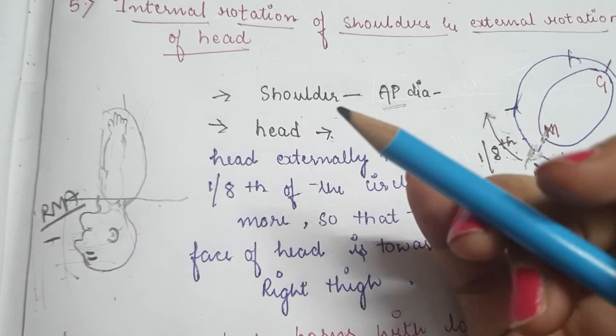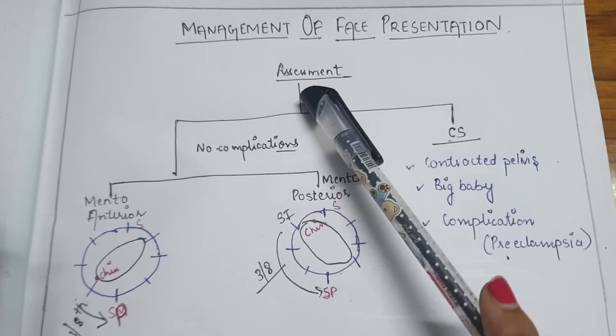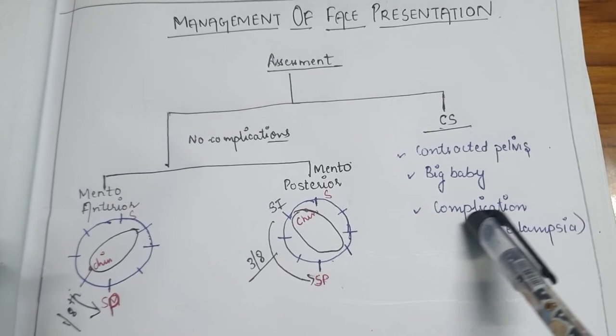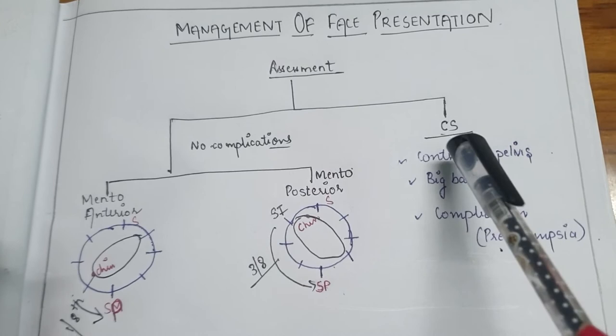After internal rotation of shoulders and external rotation of head, the whole body is born with lateral flexion. For management of face presentation, first we should assess fetal and maternal condition. If there is a contracted pelvis, a big baby, or complications like preeclampsia, immediate cesarean section should be done.